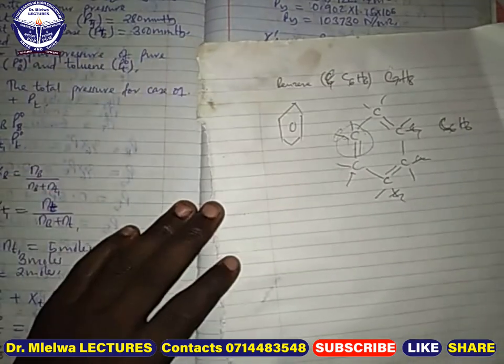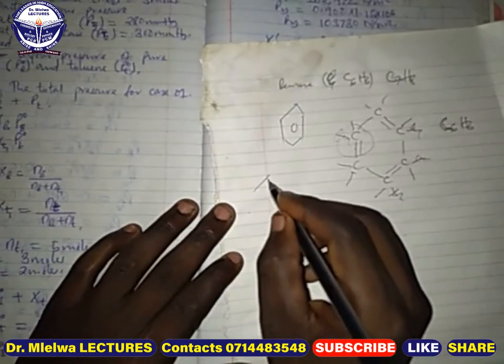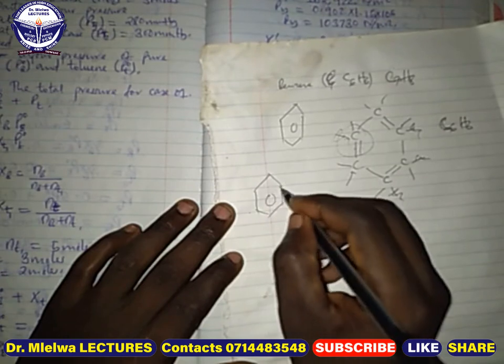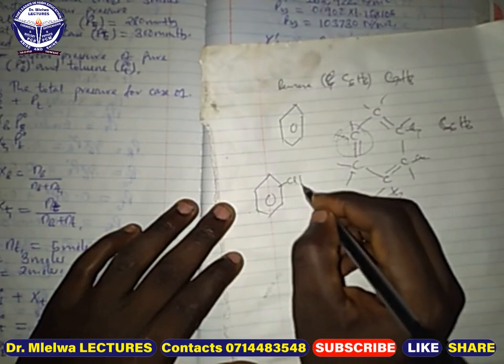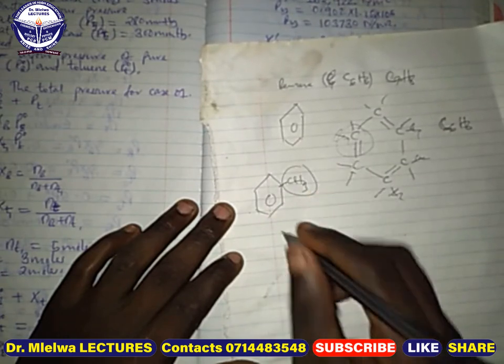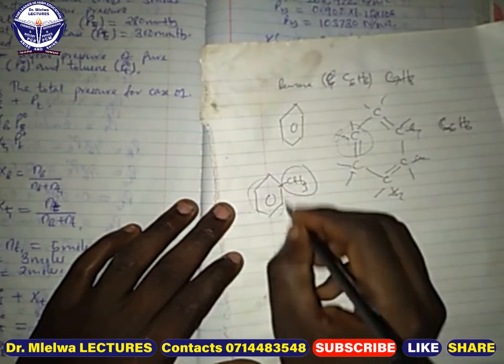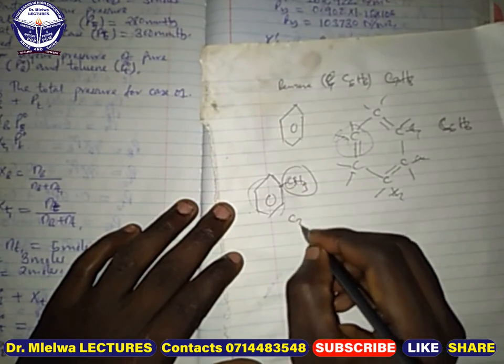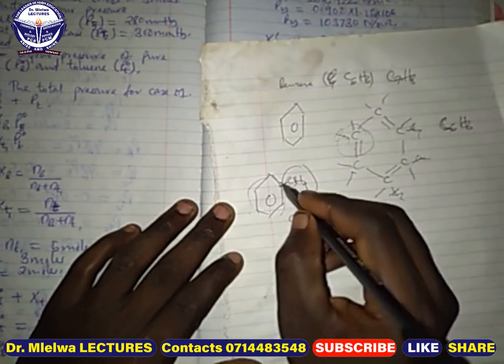In toluene, toluene is sometimes called methyl benzene. Toluene is benzene attached with a methyl group, so the carbon count goes up to seven, making it C7H8.